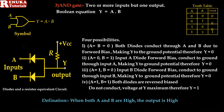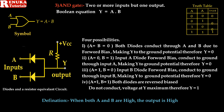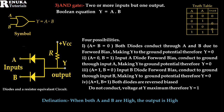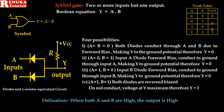If A equal to 0 and B equal to 1: input A is connected to ground, so that diode will be forward biased and conduct towards ground through input A, making the Y output at ground potential, so Y equal to 0. Case three, if A equal to 1 and B equal to 0: input B will be forward biased and current will flow towards ground through input B, making Y output at ground potential, so Y equal to 0.